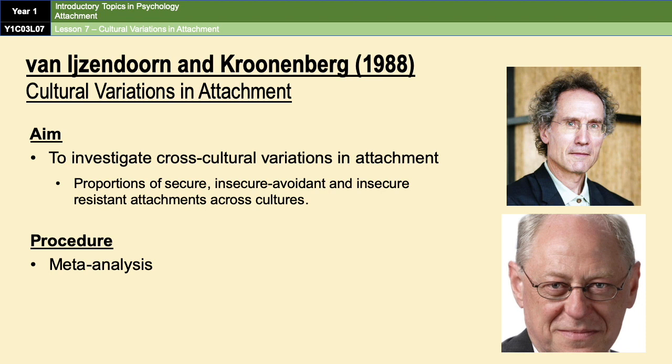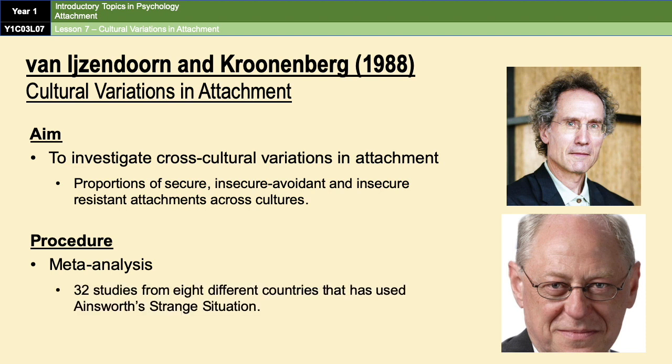A meta-analysis is a study that takes results from a lot of other studies that have already been conducted and attempts to draw a general conclusion from all of the findings. Van IJzendoorn and Kroonenberg took 32 studies conducted in eight different countries, all of which had used the strange situation to measure attachment types. Overall, they included almost 2,000 infants in their results.